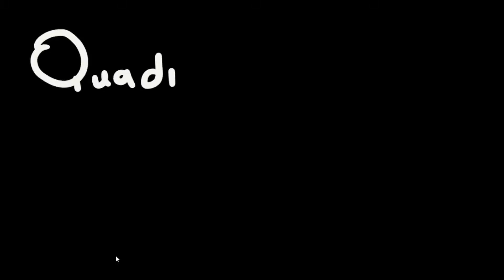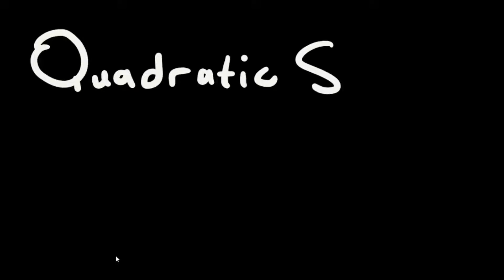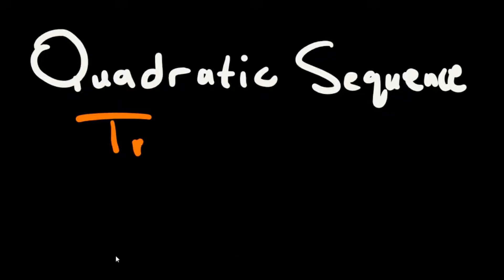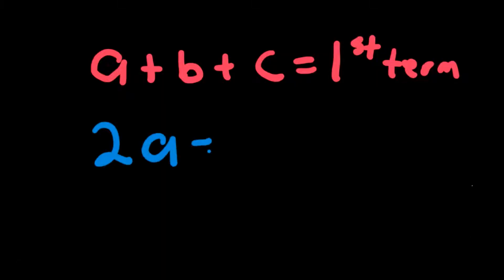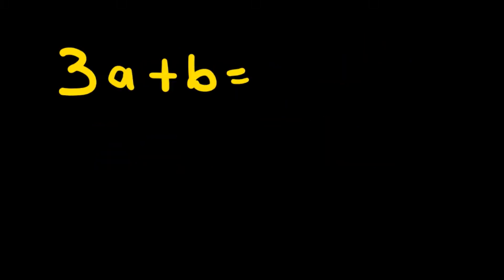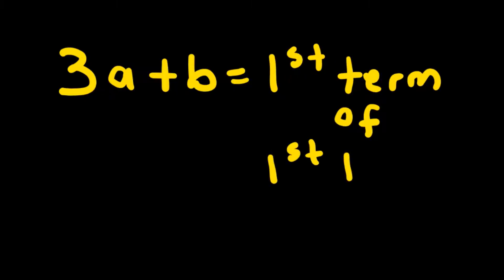Today we're going to be looking at the quadratic sequence which has a formula of T(n) = an² + bn + c. We're going to look at three things: how to derive a + b + c, which is the first term; how to derive 2a, which is the constant second difference; and how to derive 3a + b, which is the first term of the first difference.